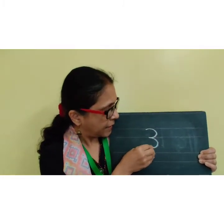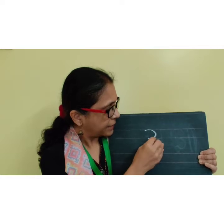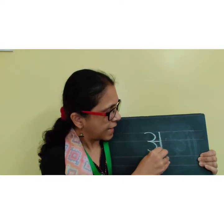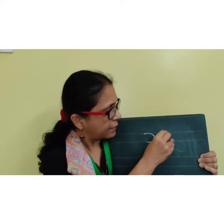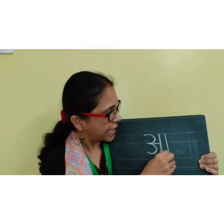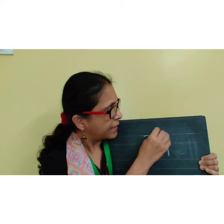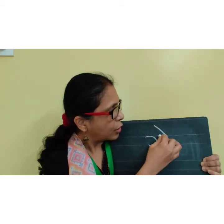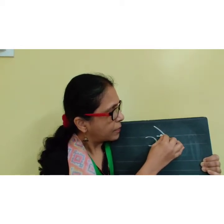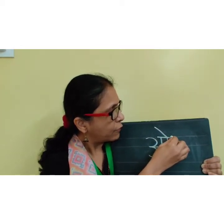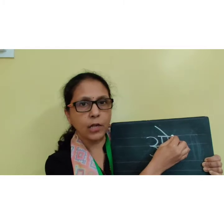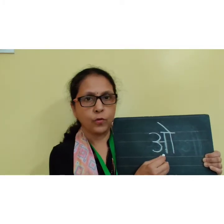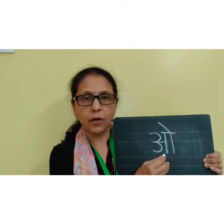Right, number 3, sleeping line, standing line, one more standing line and then matra on top, over it, small sleeping line. O, this is O.